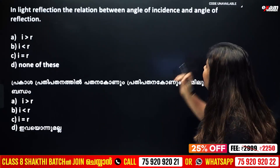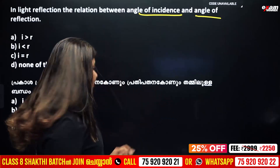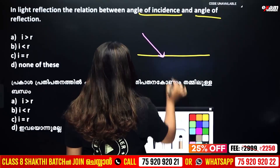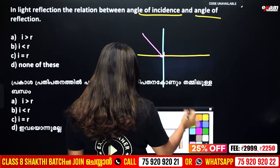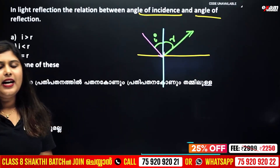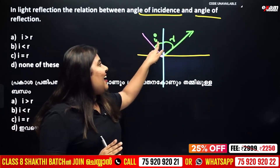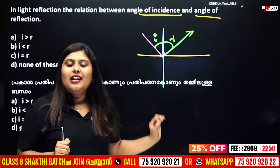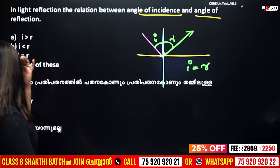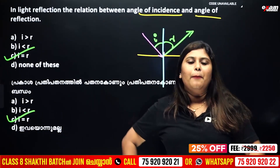In light reflection, the relation between angle of incidence and angle of reflection — you all have to know about angle of incidence and angle of reflection. The angle of incidence is equal to the angle of reflection. So I is equal to R. The answer is option C.